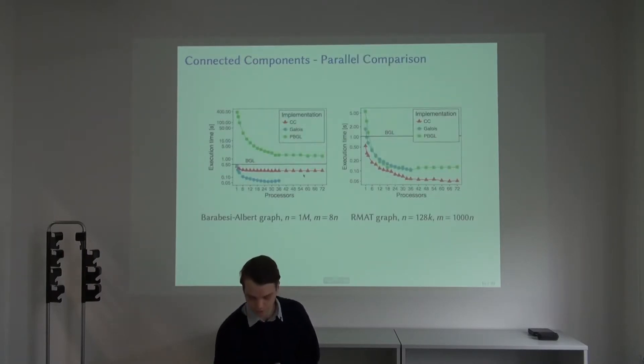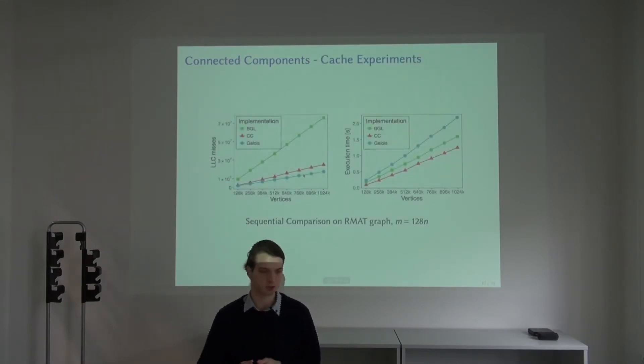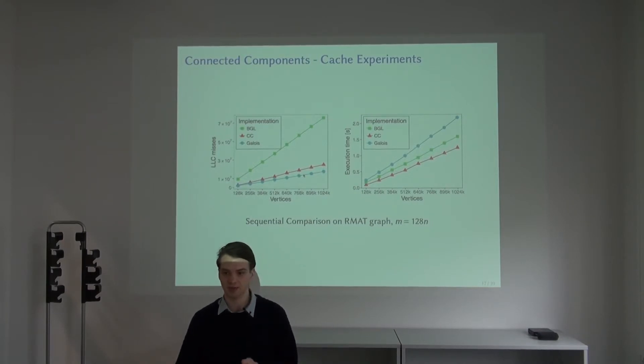We wanted to further investigate why we have these good constant factors. It turns out that it is because of better caching behavior compared to the graph search. You can see on the left the number of cache misses incurred by the boost graph library is much higher.